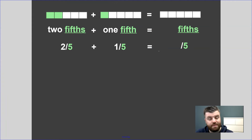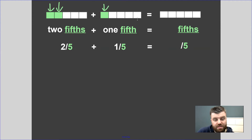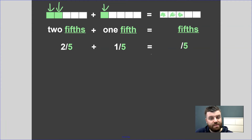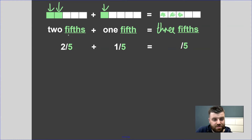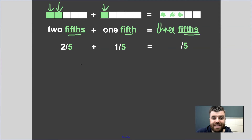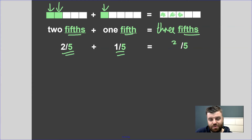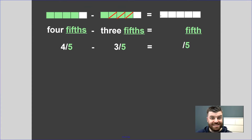It's super simple. As you can see here, we've got two fifths and one fifth, so we can do two plus one and shade in three fifths. Notice how the denominators, when they're the same, don't change — we have two fifths, one fifth, three fifths. And at the bottom we can see it written in the abstract way: two fifths plus one fifth equals three fifths.